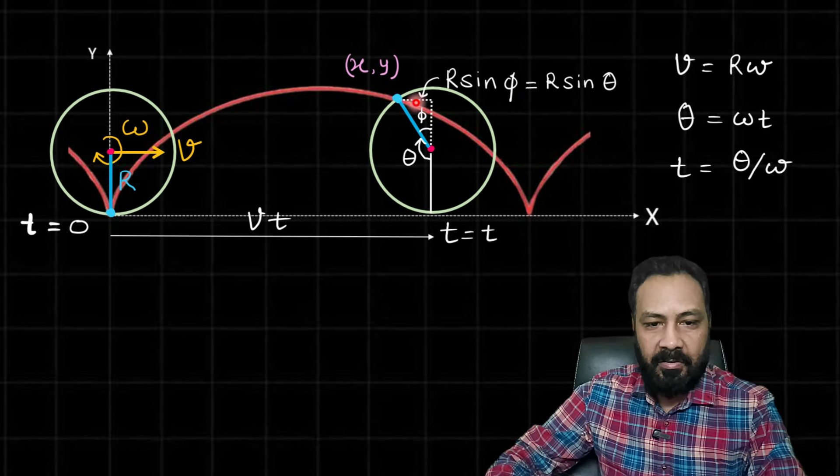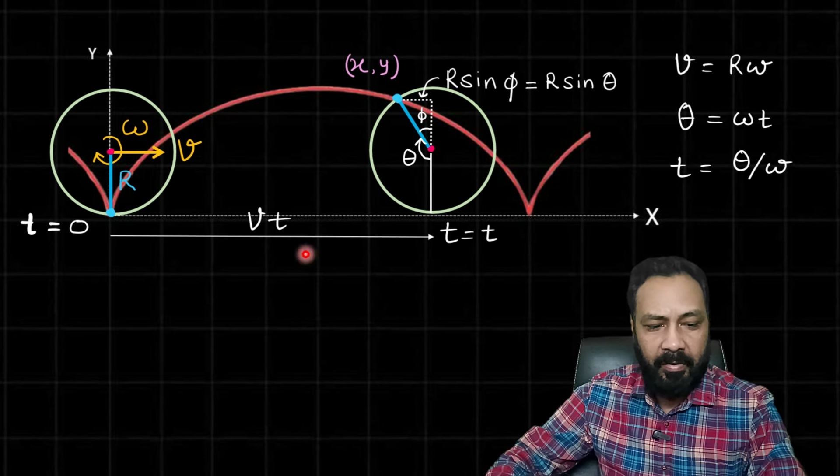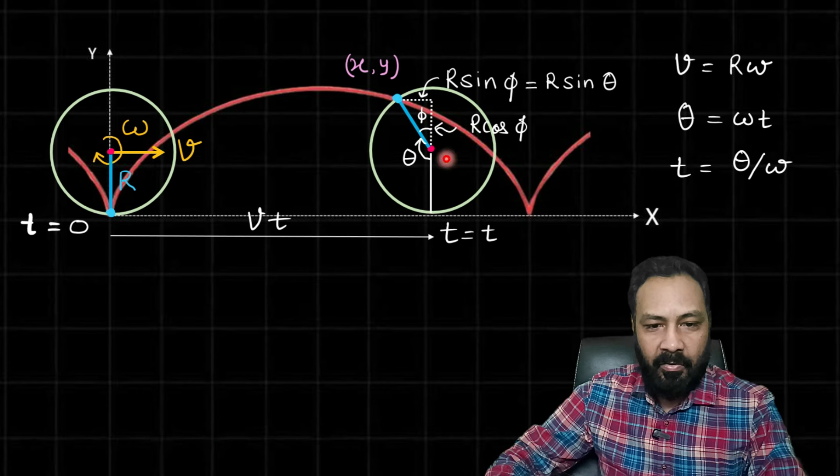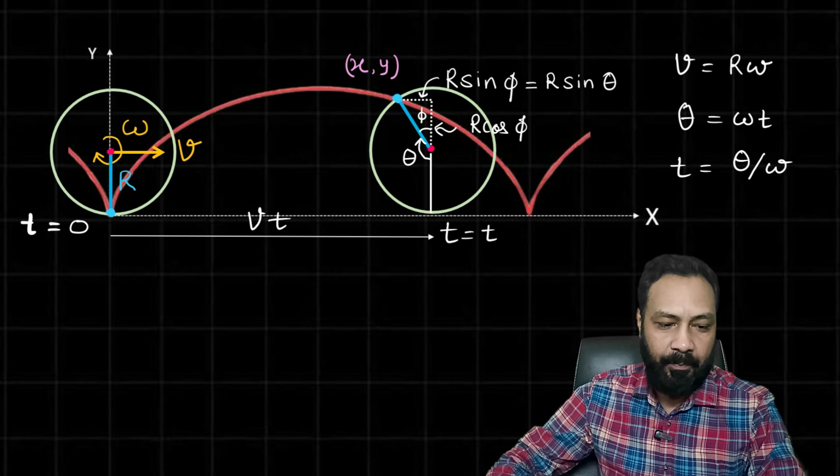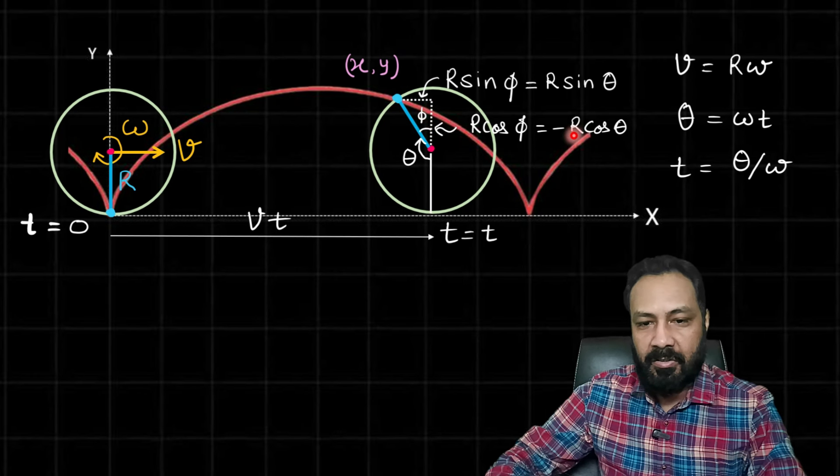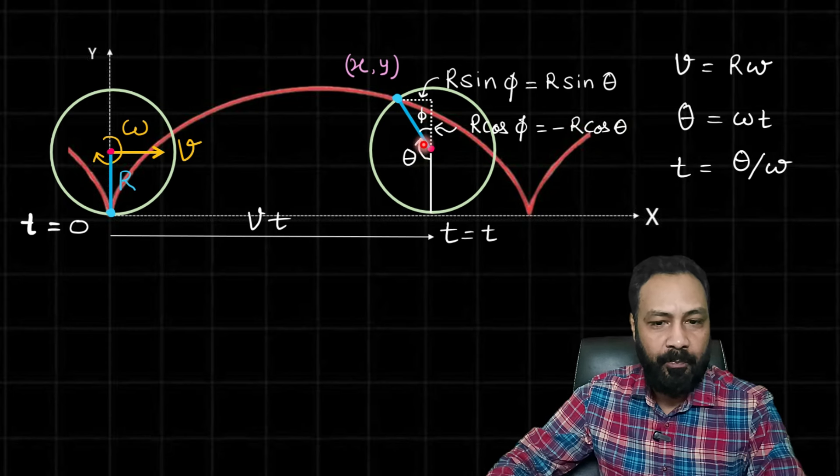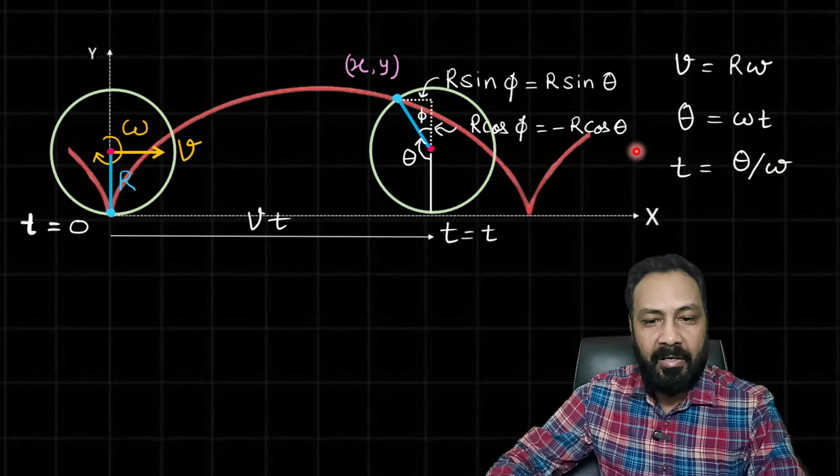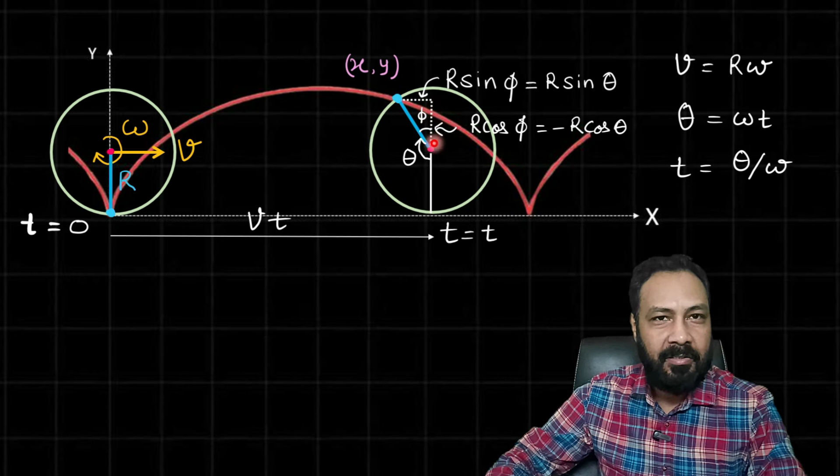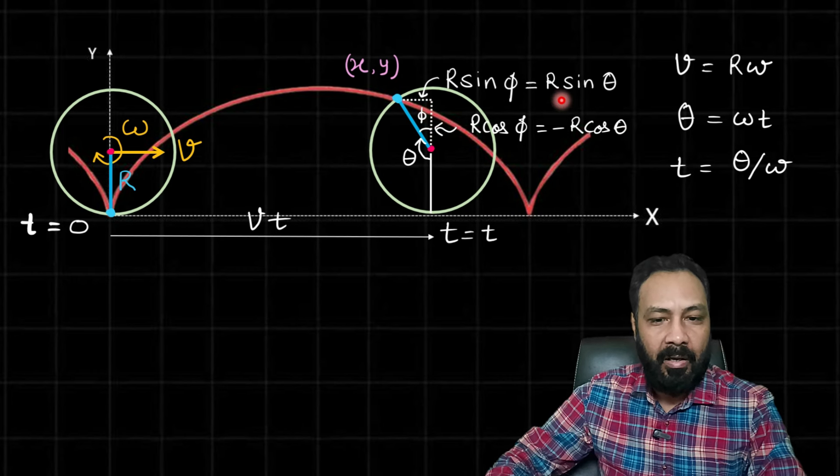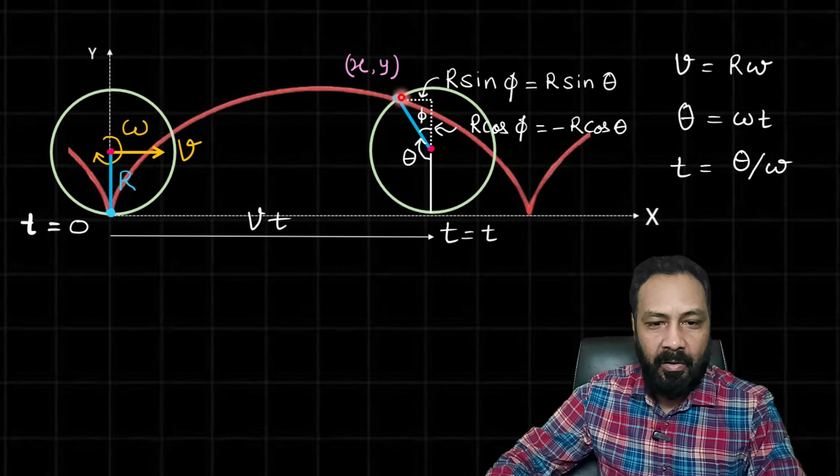And this length is r*cos(phi), and once again phi is 180 minus theta, and cos(180 - theta) is -cos(theta). So this length is -r*cos(theta). And see, this theta shown in the diagram is obtuse, so cos(theta) is negative, so that this -r*cos(theta) is positive. So this length has to be positive, and sin(theta) is positive even for the obtuse angle. So this length is also positive.